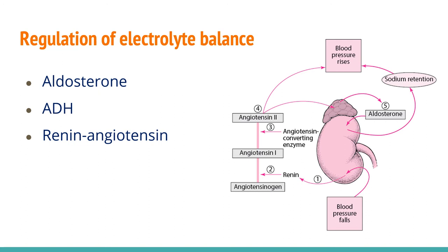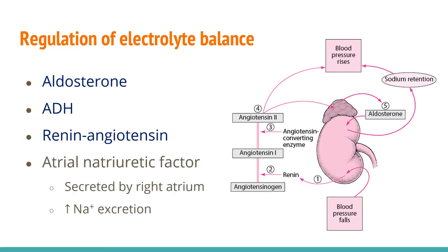The renin-angiotensin system is another system that regulates electrolyte and water balance. Decrease in blood pressure due to decreased extracellular fluid volume is sensed by the juxtaglomerular apparatus of the nephron, which secretes renin. Renin acts on angiotensinogen to produce angiotensin 1, which is then converted to angiotensin 2. Angiotensin 2 stimulates the release of aldosterone from the adrenal cortex and also acts on angiotensin 2 receptors. Additionally, atrial natriuretic peptide, secreted by the right atrium, increases sodium excretion from the kidney.